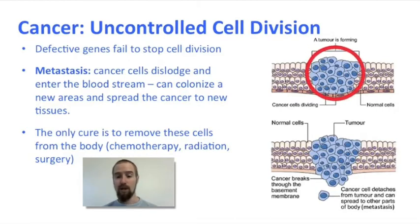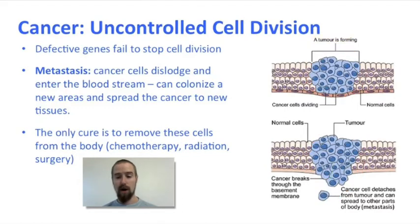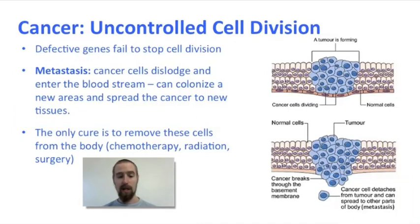This lump of blue, disorganized cells in this figure is a tumor. Sometimes when tumors get big enough, cells may be dislodged from the mass and enter the bloodstream, which can carry the cancerous cells to other parts of the body, spreading the cancer. This is called metastasis, and metastatic cancers are very difficult to treat because you can never be sure where new cancerous cells may appear in the body.